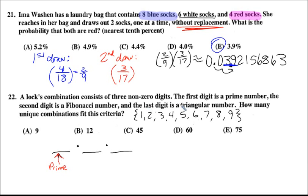So the prime numbers amongst these, one is not prime, two is, three is, four is not, five is, six is not, seven is prime, eight is not prime, and nine is not prime. And the number of possibilities, because the first digit is a prime number, well, we have one, two, three, four choices. So there's a four here.